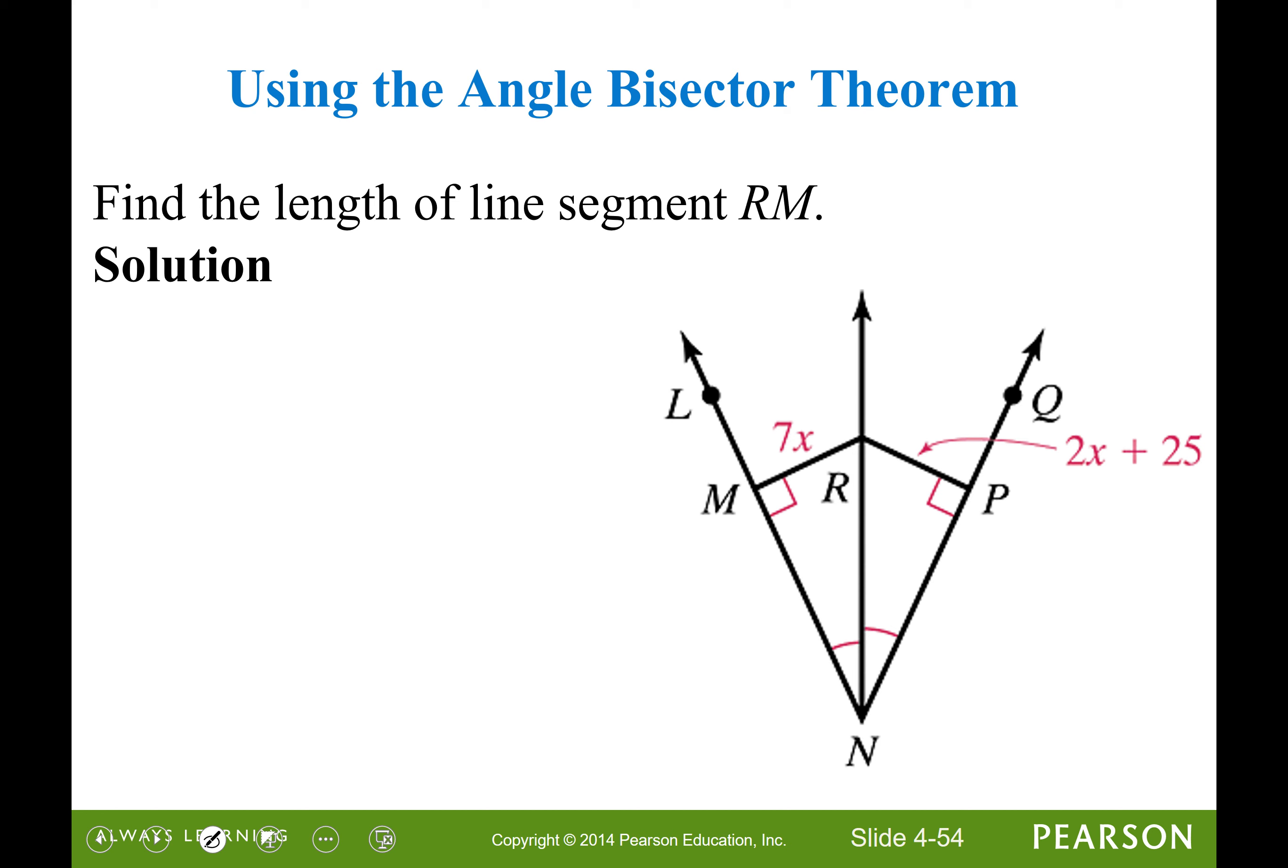Let's use the angle bisector theorem to find the length of line segment RM. We're trying to figure out what that is. So if we can write an equation with an X in it, we can find that length there. We know that NR bisects the angle LNQ. We know this is a bisector because of this single marking. We know that these are perpendicular from the codes there.